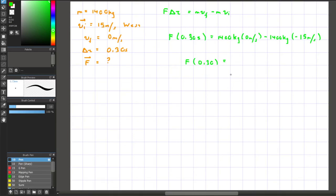And we can go ahead and solve for the force. When we take 21,000 and divide it by 0.30, we get a force of 70,000 newtons east.